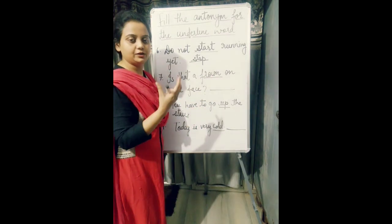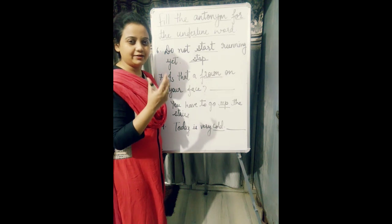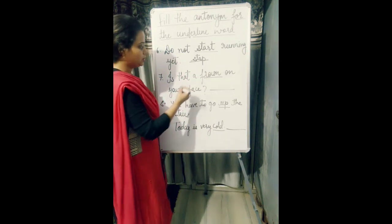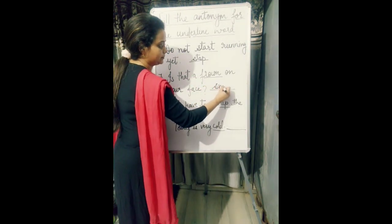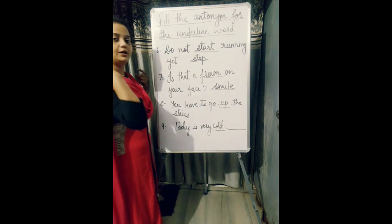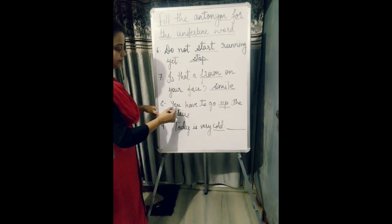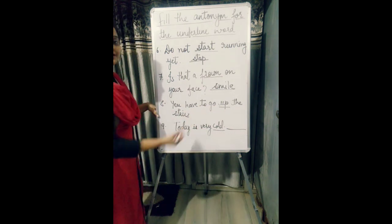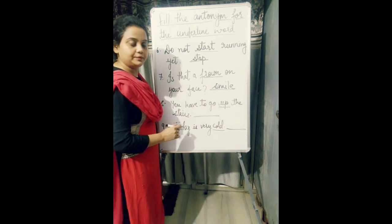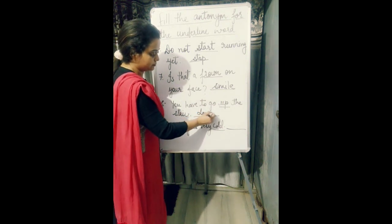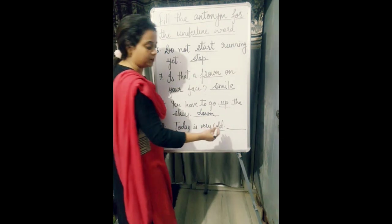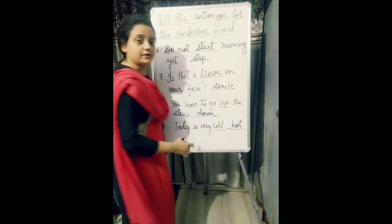Frown is an expression of a face when you make an angry face or when you get lines on your forehead — that's called a frown face. Smile is the antonym of frown. So the sentence will be: is that a smile on your face? Next: you have to go up the stairs — what is the antonym of up? Down. Last: today is very cold — the opposite of cold is hot, so today is very hot.